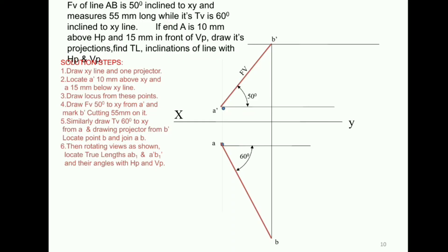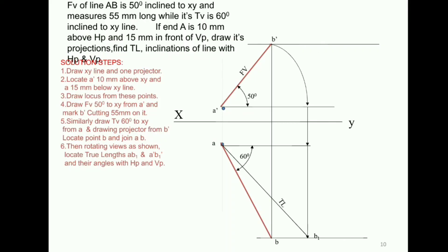We use the auxiliary method — rotating X1 parallel — and find the true length for B1 using a perpendicular line. Then we get the true length. We measure the true length with a compass, cut B' at the true length, and place it on the horizontal line. Then we have the projection showing front view and top view. The true length with horizontal plane is theta and the true length with vertical plane is phi.